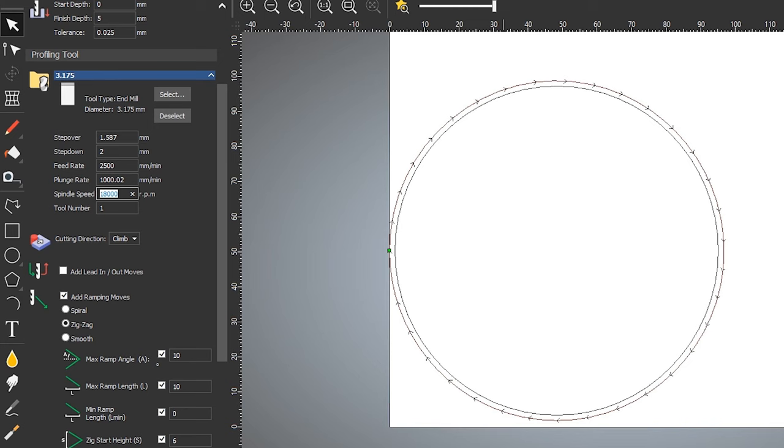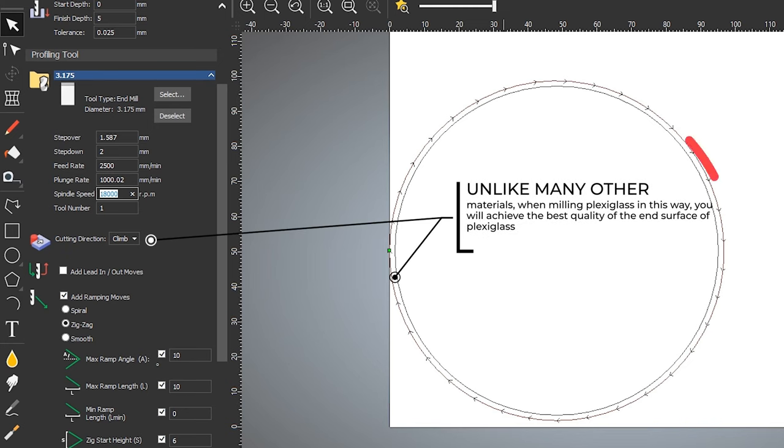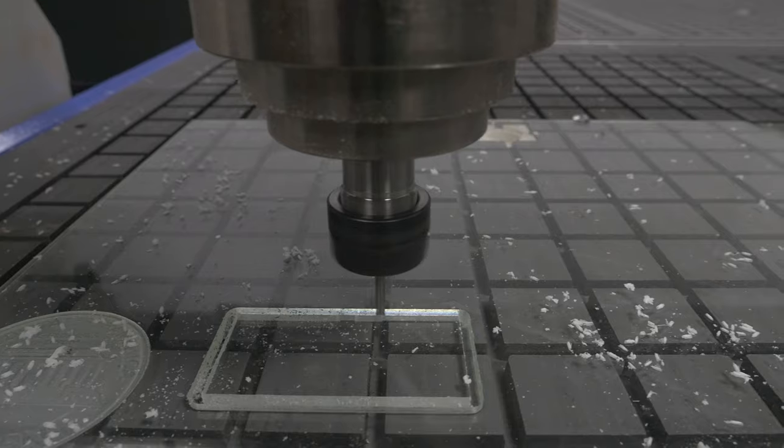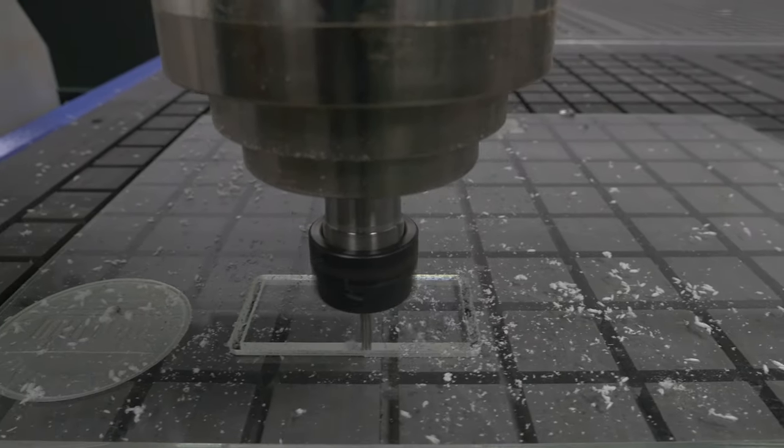When milling plexiglass, we recommend that you use the parallel flow. That is, during machining, the direction of rotation of the cutter must be parallel to the direction of movement of the spindle.